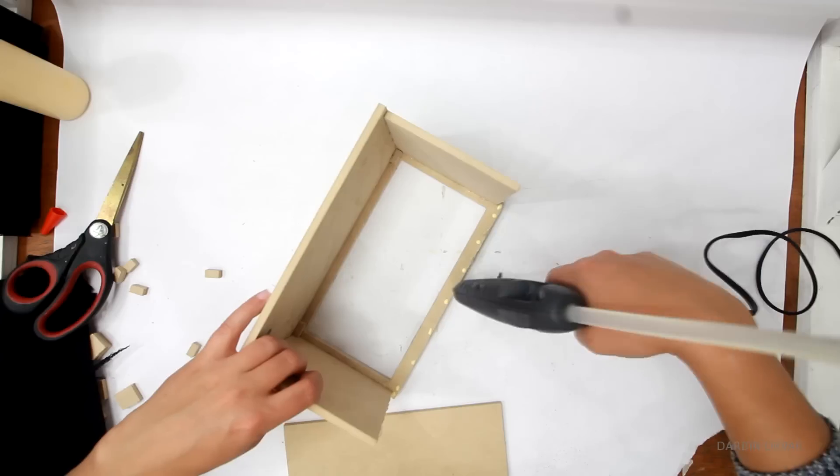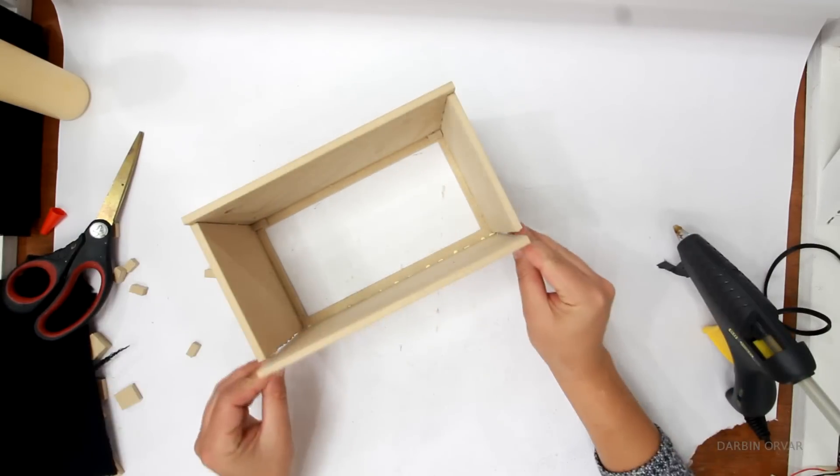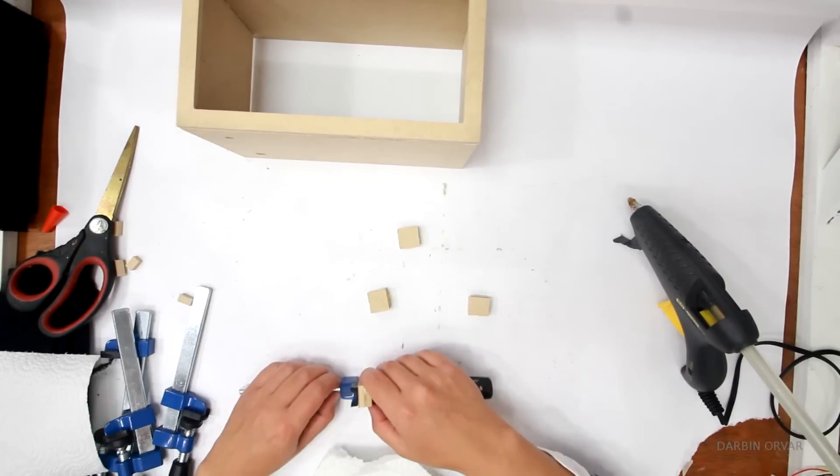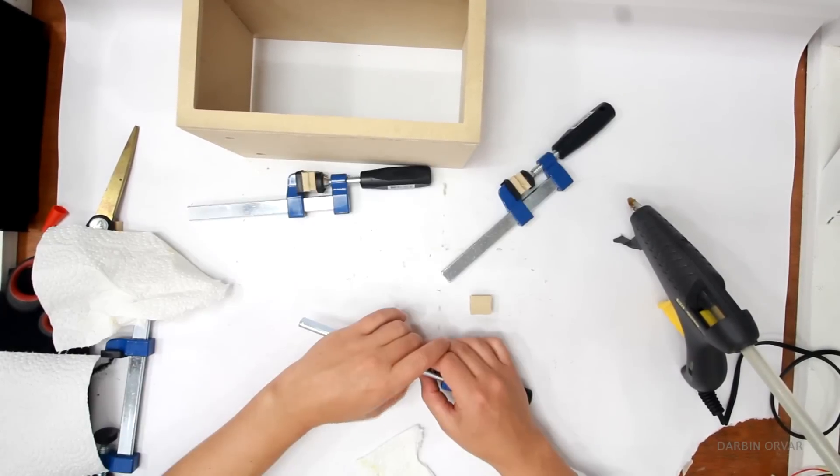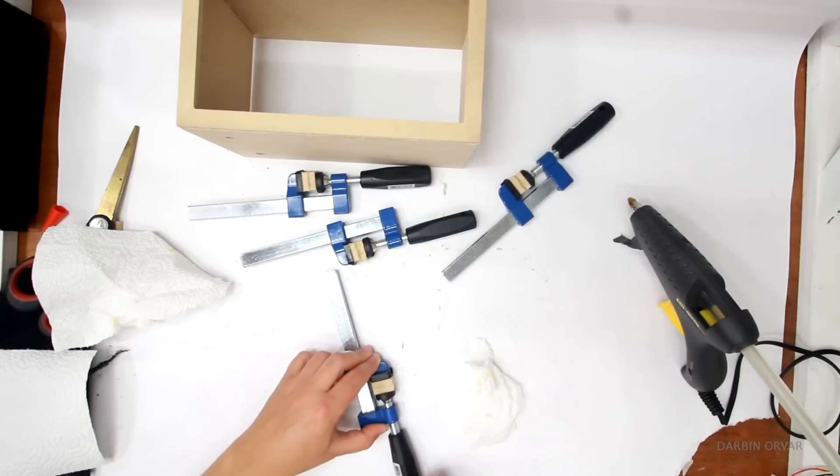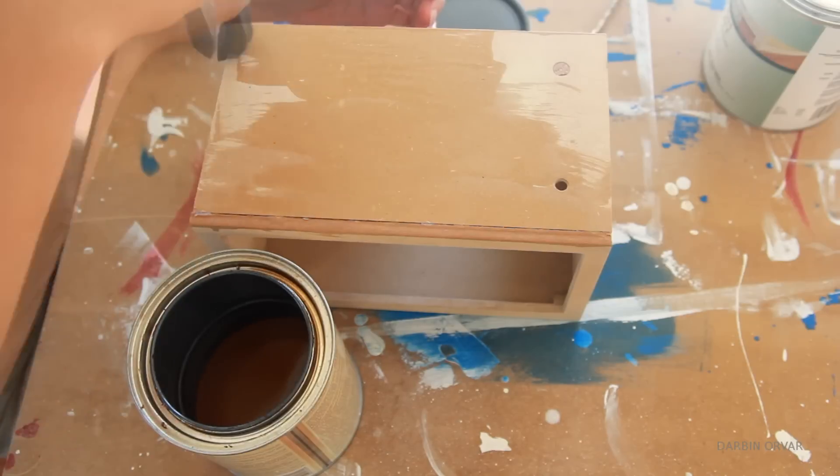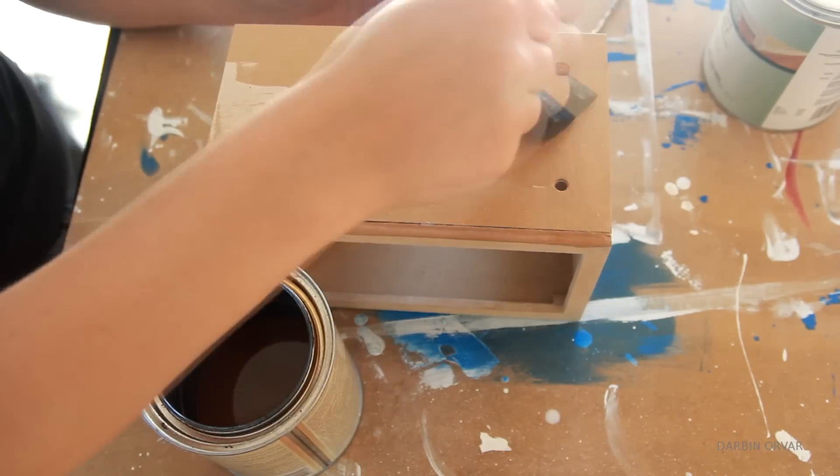Then just continuing to put the box together. And I'm also gluing together some thicker support pieces, which I will glue into the box which the backing will screw into. So now I have the basic box complete, which means all the sides together except the back with the fan holes which we'll screw in later.